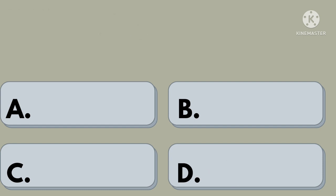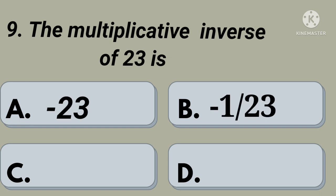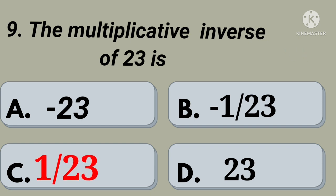Ninth question: multiplicative inverse of 23 is. Option A: minus 23, option B: minus 1 by 23, option C: 1 by 23, option D: 23. Your time starts now. Right, option C: 1 by 23.